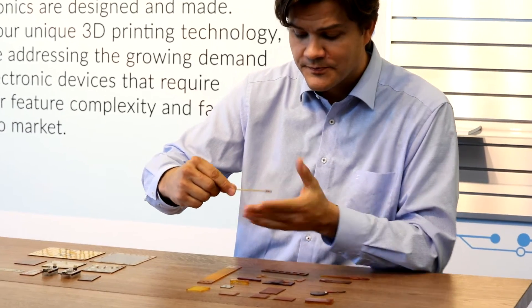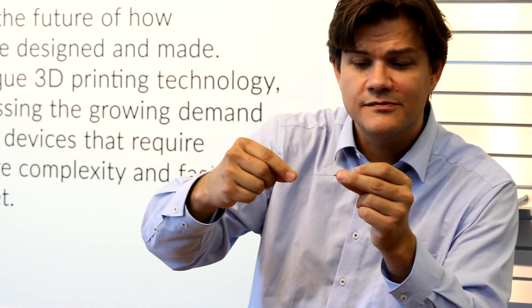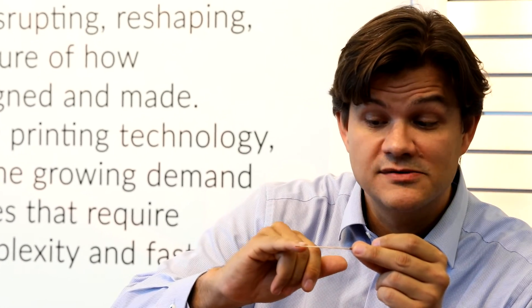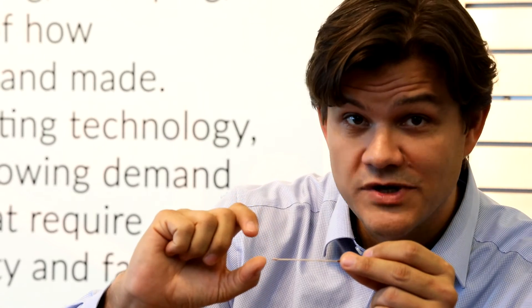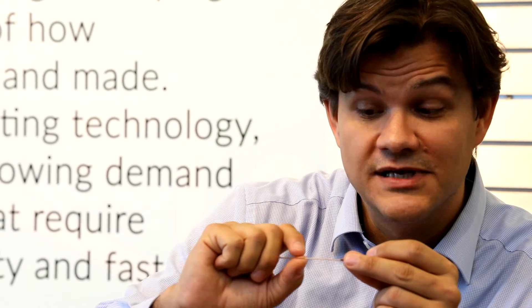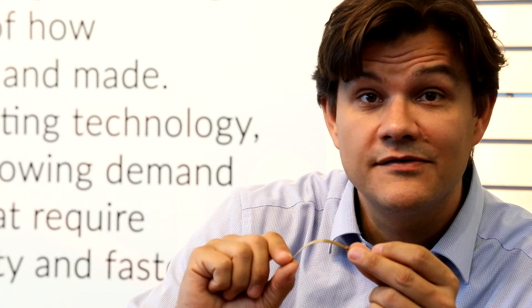You'll see certain areas were printed higher, certain areas are printed lower. The higher areas are now thicker; they have a rigid mechanical property. This lower area gives you the ability to bend.